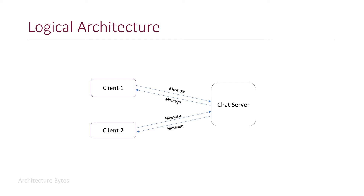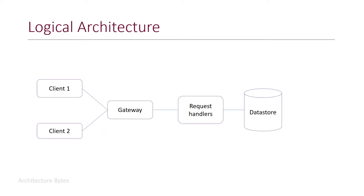Let's begin with a very simple logical architecture. There are multiple chat clients which send and receive messages to and from the chat server. The same logical architecture with individual components of the chat server shown here — there is a gateway which handles communications with the client, request handlers behind it, and there is a data store.